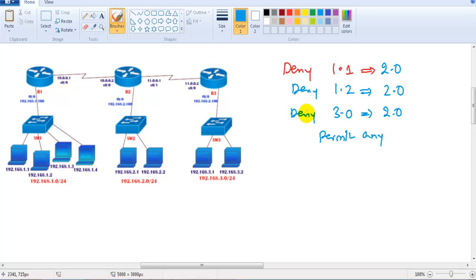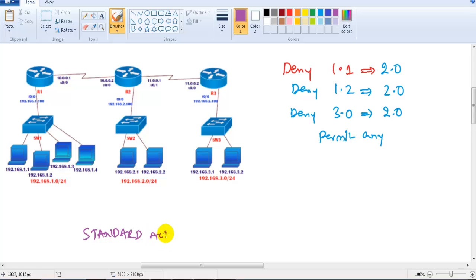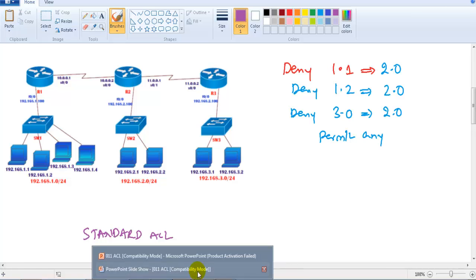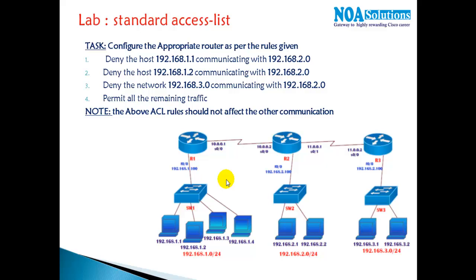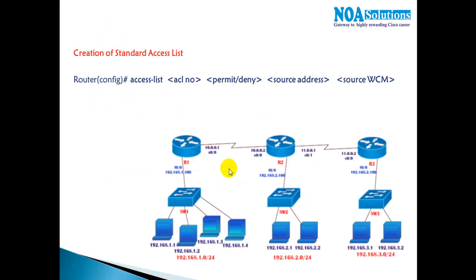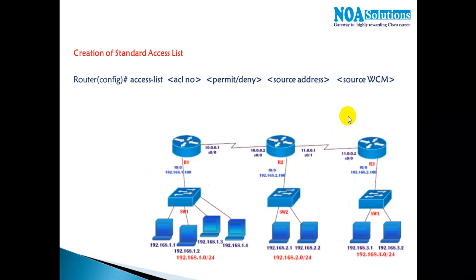We need to implement this using standard ACLs because we are not filtering based on any services. The syntax for writing an ACL statement is: access-list [ACL number] permit/deny [source address] [source wildcard mask]. Before getting into syntax, we need to decide on which router to configure it.